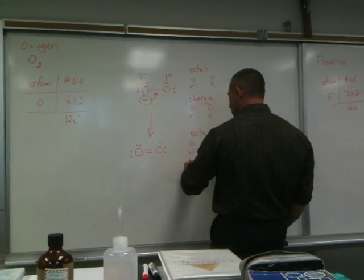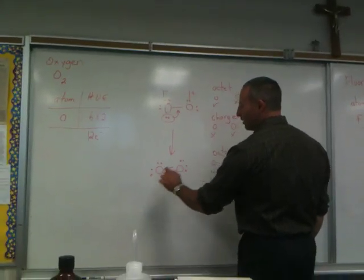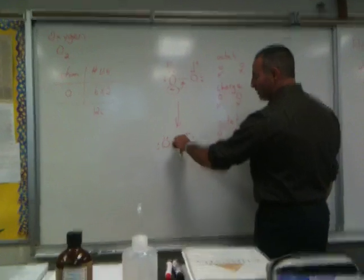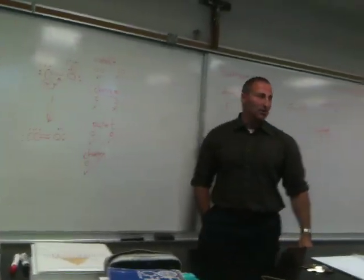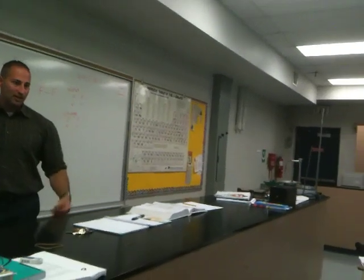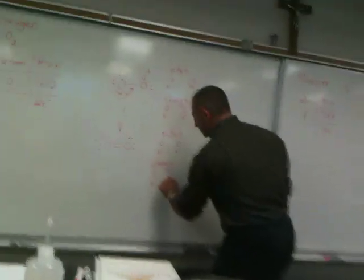As for the charge, the left oxygen atom has two, four, remember bonding pairs count for one, five, six. Oxygen has six valence electrons, so it likes to accommodate six electrons for charge consideration. And the right oxygen, same thing.